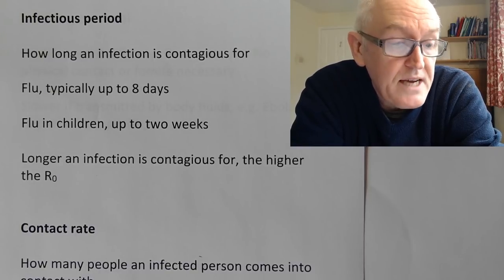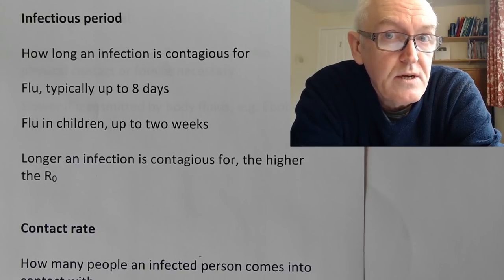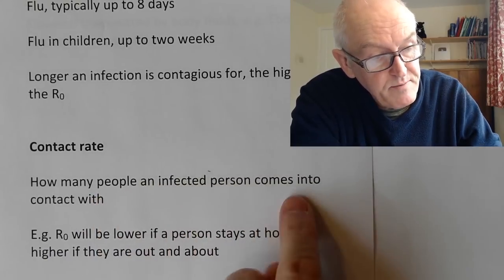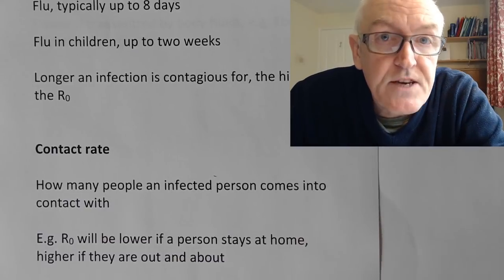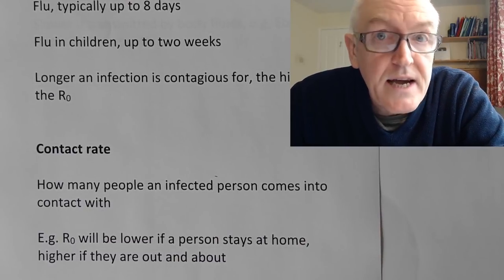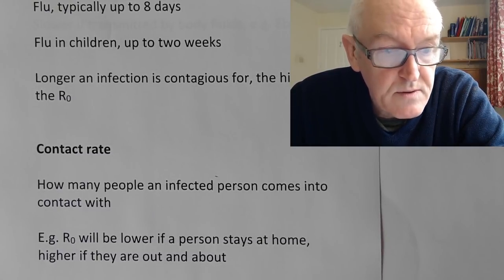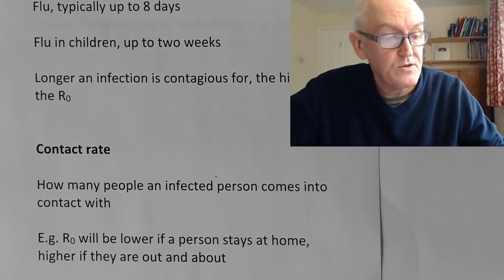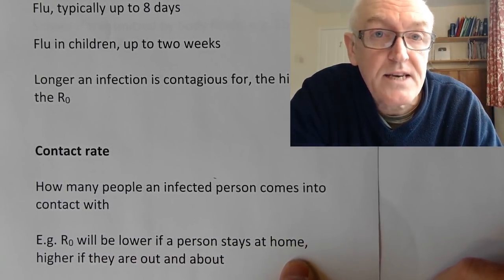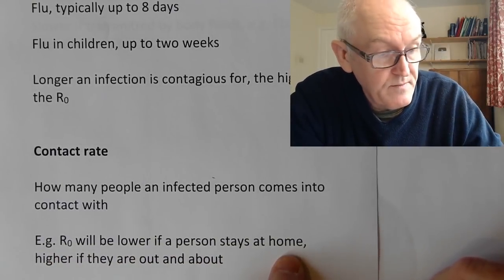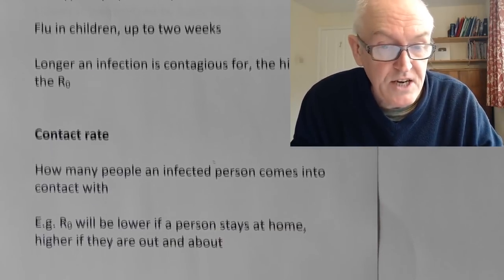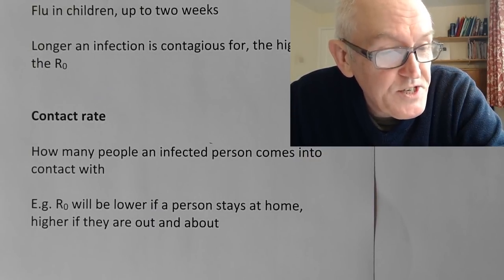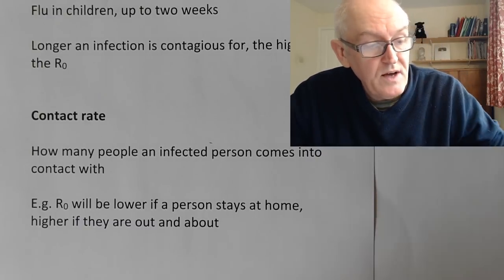The infectious period is really a biological factor — an interaction between the infection and the host. Another determinant is the contagion rate: how many people an infected person comes into contact with. If someone has the most infectious disease in the world but is isolated on a Pacific Island, they're unlikely to spread it. The R0 will be lower if a person stays home and isolates, and higher if they have more interactions with other people.